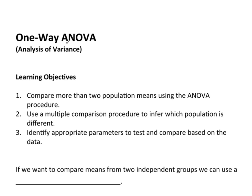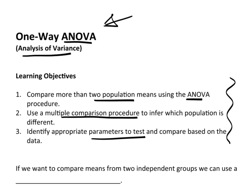Let's turn our attention now to one-way ANOVA. ANOVA actually stands for Analysis of Variance. Let's take a look briefly at the learning objectives, then jump into what ANOVA is all about. We want to compare more than two population means using an ANOVA procedure. We want to use a multiple comparison procedure to infer which population is different, and identify appropriate parameters to test and compare based on the data. These are the main objectives for these next several videos.